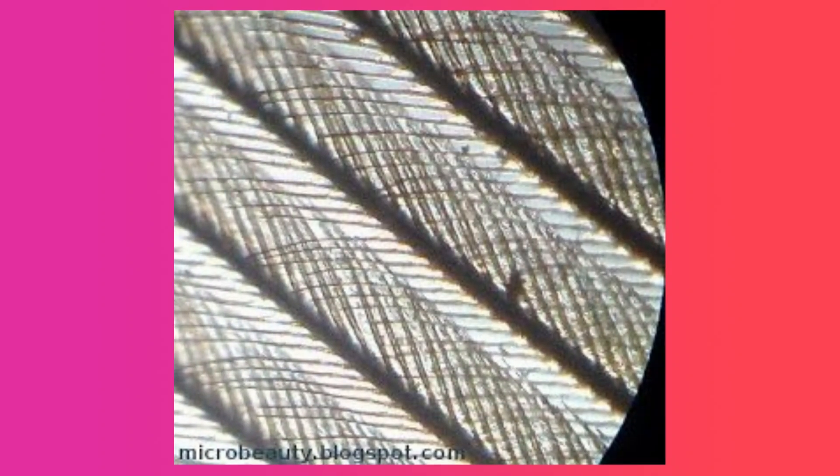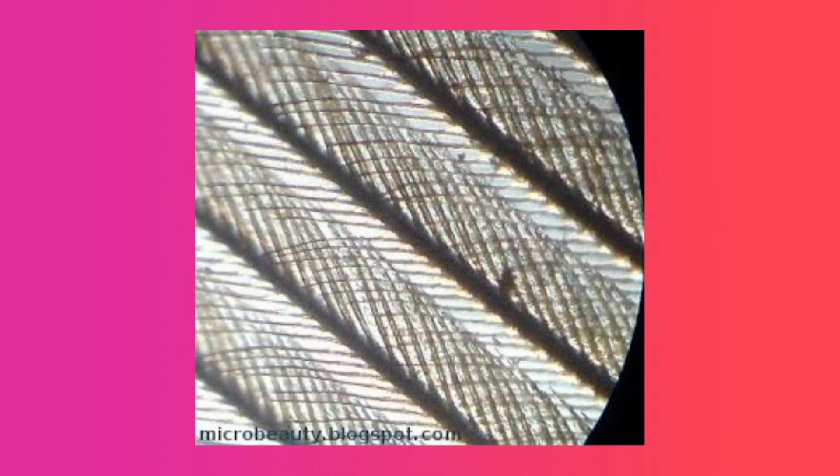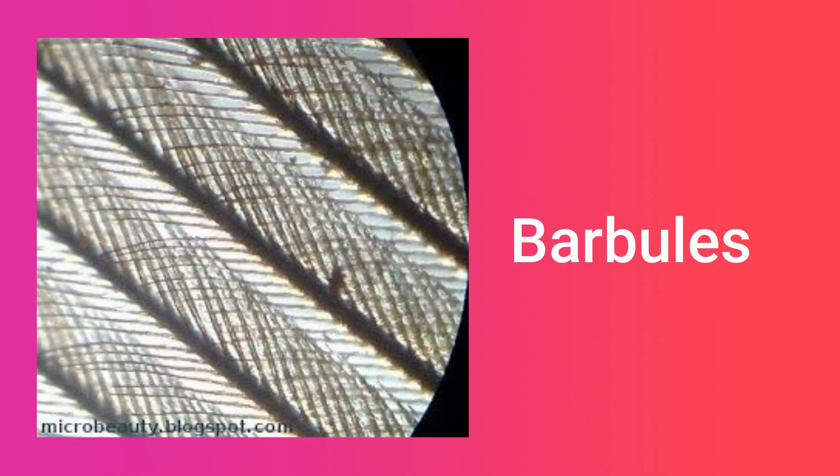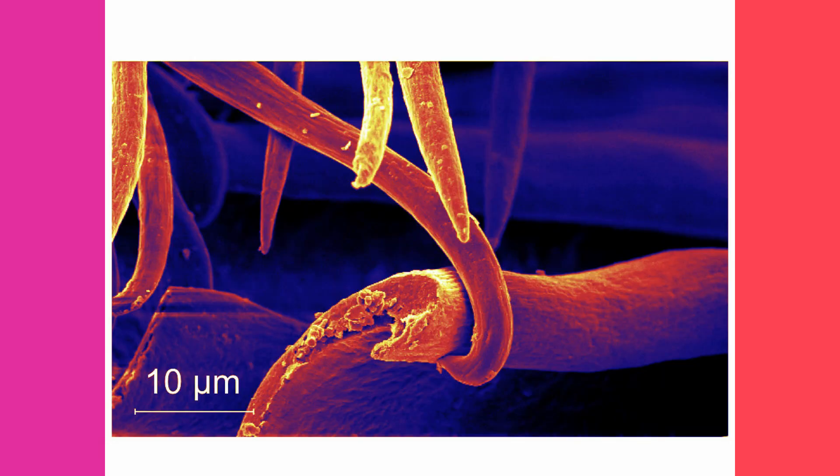Let's see the structure of the feather. The central axis of the feather is called the rachis, and the branchings are called barbs. Barbs are divided into smaller branches which are called barbules. These barbules have little hooks which get interlocked with other barbules.